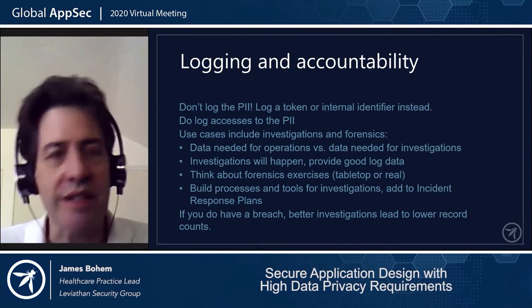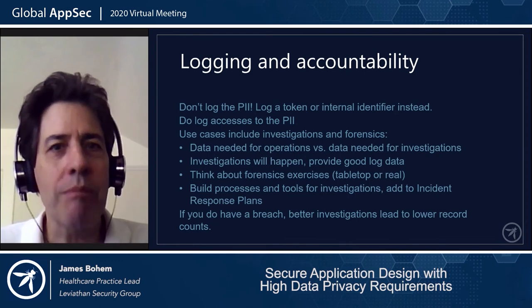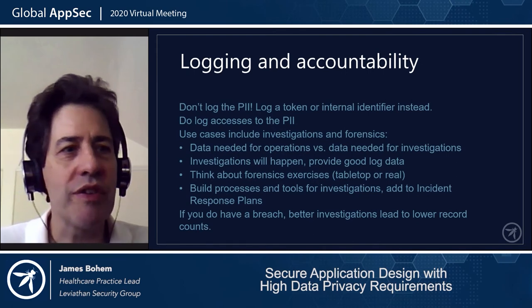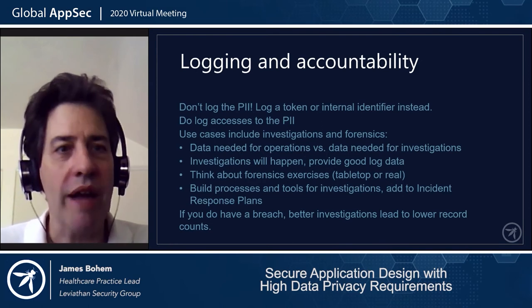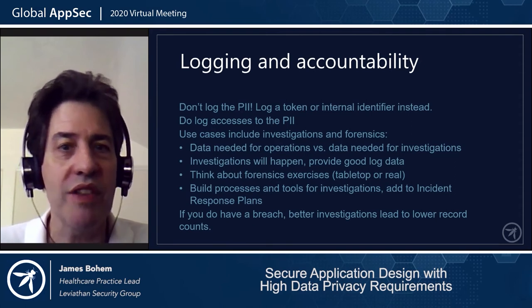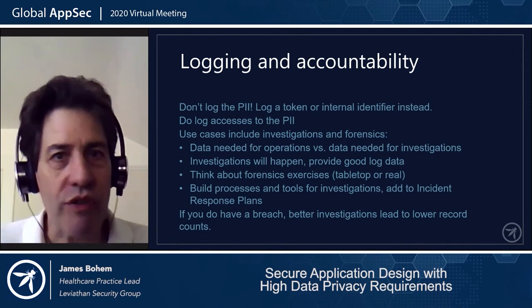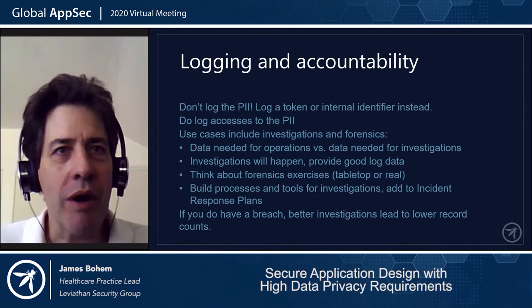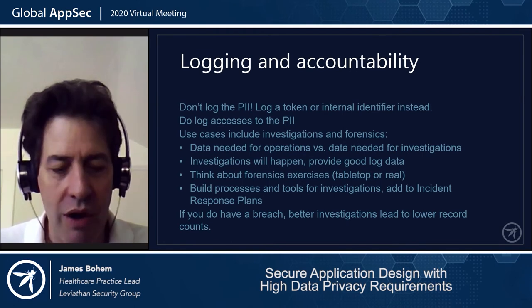Imagine a scenario where a customer reports their record is incorrect. The customer service rep confirms it and files a ticket for a programmer to investigate. The programmer does not have access to the PII — instead, the customer service person passes the unique identifier for that record to the programmer. They don't have access to the identity at all, but they don't need it. The clue they need has been given to them, and they can conduct their investigation. You can build debug and forensic tools that rely on a handoff of identifiers — maybe as an input, a list, or a spreadsheet — to do lookups on the data in question.